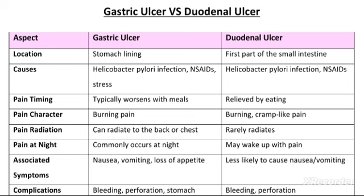Next difference hai associated symptoms — matlab pain ke ilawa aur kya symptoms ho sakti hain. Gastric ulcer mein pain ke saath nausea bhi ho sakti hai, vomiting bhi ho sakti hai, aur loss of appetite — appetite jo hai woh kam ho jaati hai. Jo duodenal ulcer hai, woh less likely to cause nausea and vomiting — matlab duodenal ulcer ki pain ke saath nausea ya vomiting ke chances bahut kam hote hain.